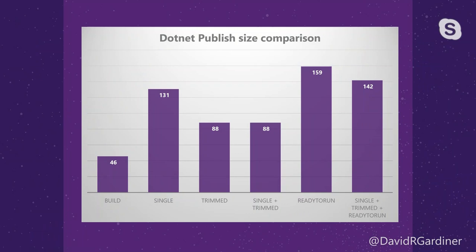Here's a size comparison using a larger solution. A simple dotnet build produced 46 MB of output. Producing a single EXE including the runtime went up to 131 MB. Using the trimmed option brought it down to 88 MB. Single EXE with trimming was about the same. Adding ready-to-run, which includes ahead-of-time compiled native code, went up to almost 160 MB. Trimming that back down got to 142 MB. Obviously it varies by application how much difference trimming makes, but this gives perspective on the different options.